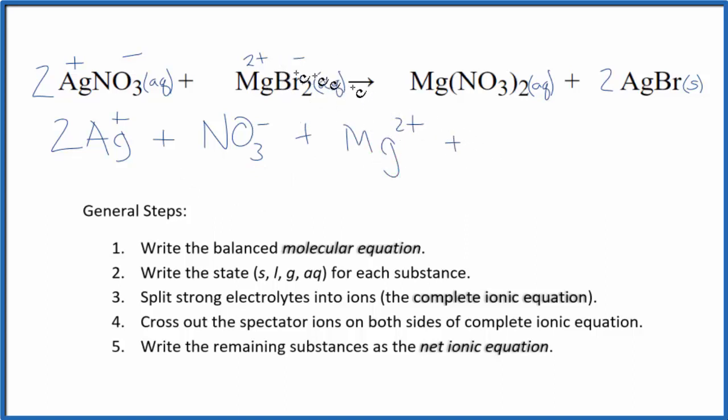And then the bromine, or the bromide ion, I should say, is Br minus. But this subscript here, that means we'll have two of them. Those are the reactants.